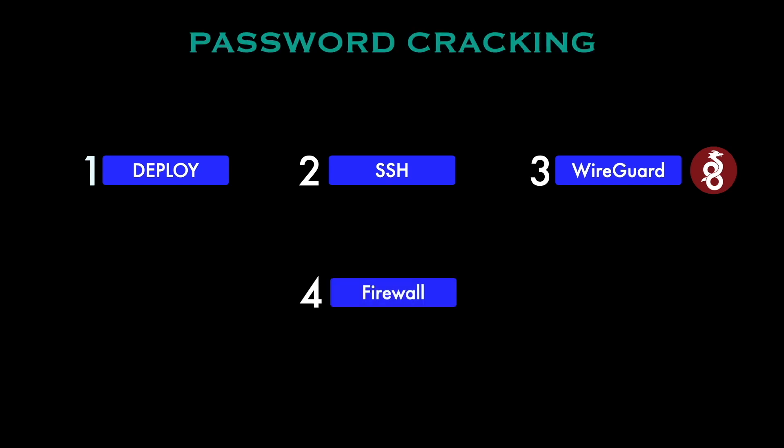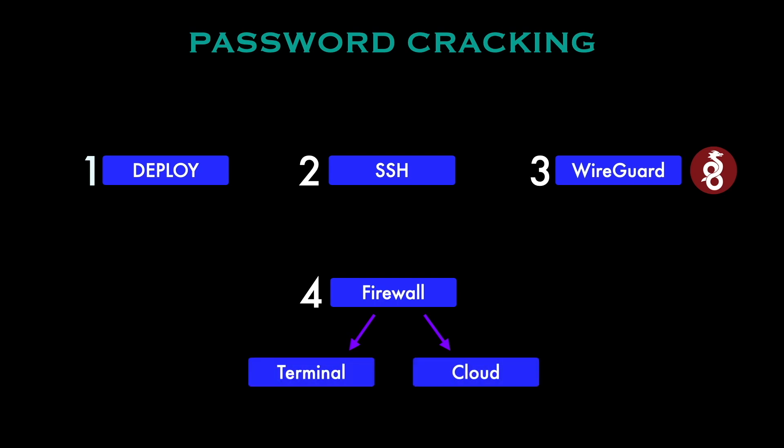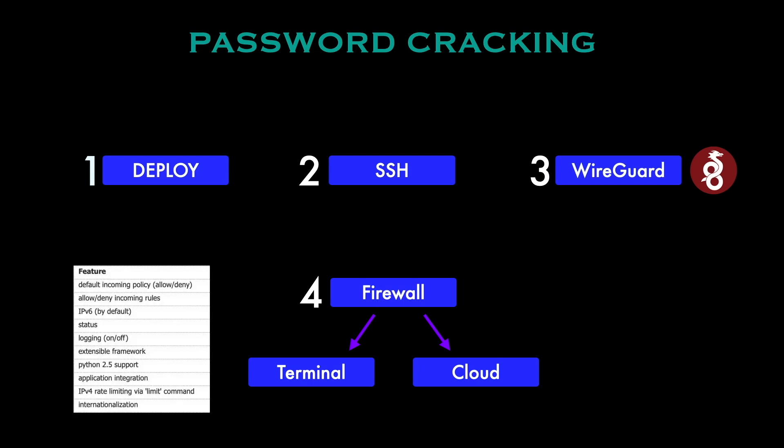Step four is installing and configuring a firewall by implementing specific firewall rules to block unwanted connections and keep the server secure. This can be done in two ways, both of which we'll show later in the video. Via the terminal, we'll use an Ubuntu server to install the uncomplicated firewall, which comes with many features. The second way is via the AppCloud console, where we can import a set of pre-made rules. The main aim is to allow SSH and WireGuard connections, as WireGuard uses the UDP protocol.